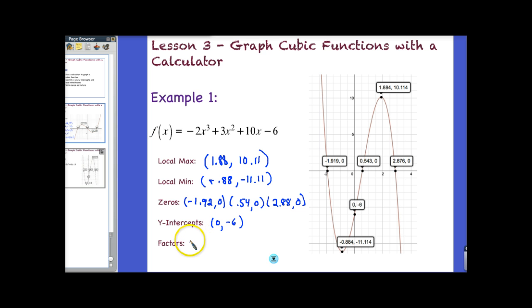So let's go ahead and write our factors. So our factors are going to be x and then the opposite sign of these. Remember, so it's plus 1.92 times x. In this case, it would be minus .54. And then in the final case, it's going to be x minus 2.88.